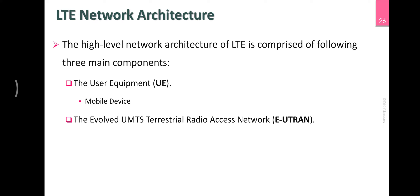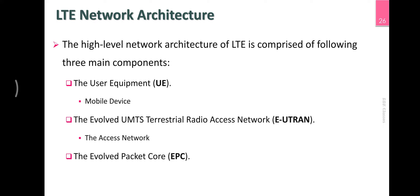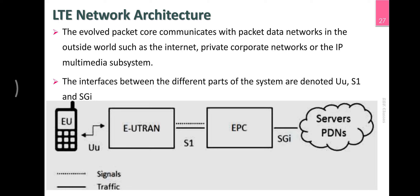The second section is E-UTRAN. The access network is a device. The user equipment is a mobile device. The next section is an Evolved Packet Core. This is an Evolved Packet Core, LTE network.